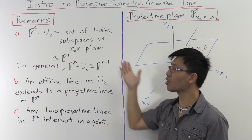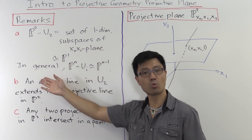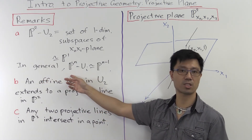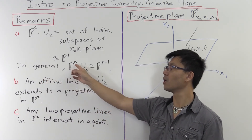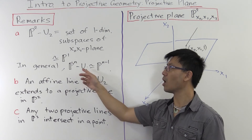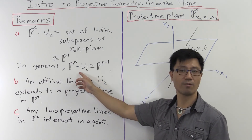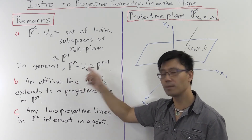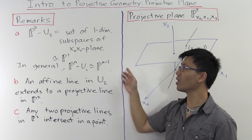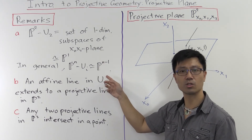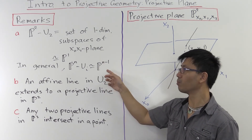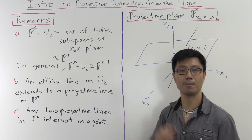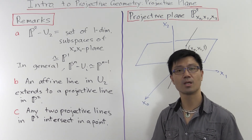In fact, this argument generalizes quite easily to show that if you have n-dimensional projective space and you remove one of the affine patches Ui — it doesn't matter which one — you'll in fact get something which is isomorphic to projective space of dimension n minus 1.